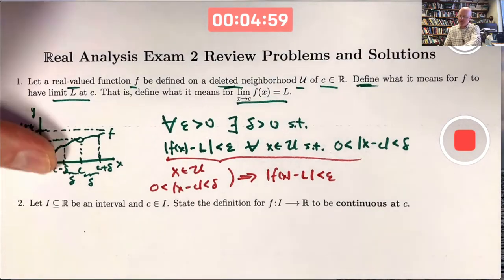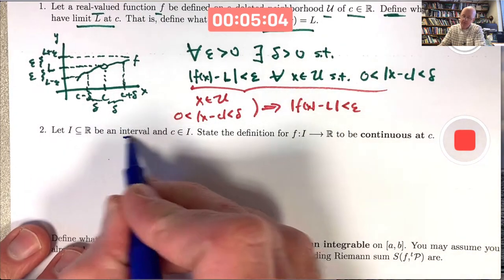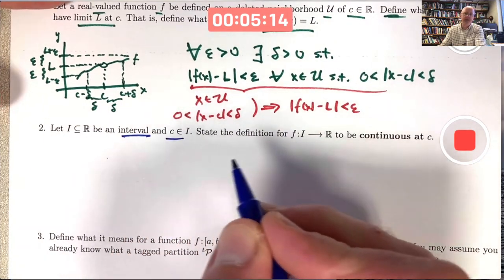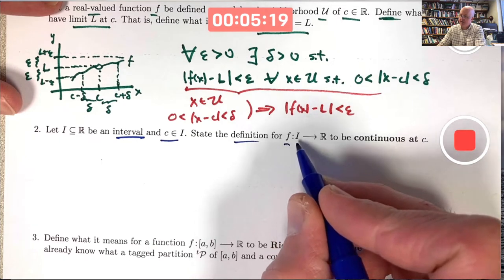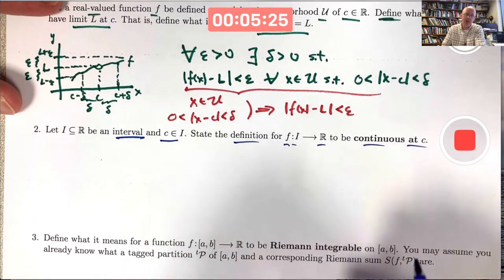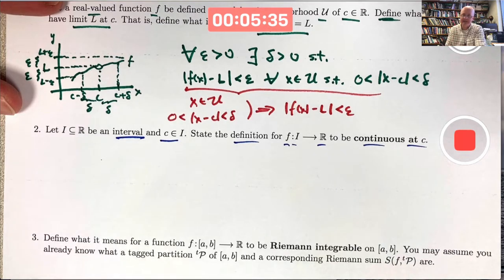On to problem number two. Let I, a subset of the real numbers, be an interval — open, closed, half-open, infinite, doesn't matter. Let c be a number in this interval. We want to define what it means for a function defined on I with real values to be continuous at c. Essentially, it fits the definition of a limit when l is the function value. For continuity we want to fill in that hole — we don't want to delete a neighborhood, we want I itself.